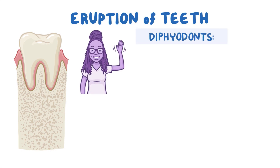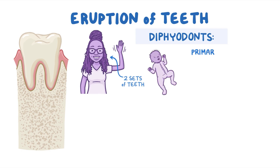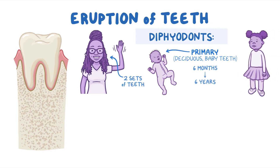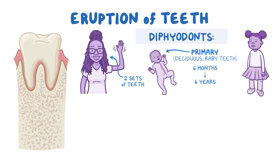Humans are diphyodonts, which means we have two sets of teeth during our lifetime. The first set, the primary teeth, also called deciduous teeth or baby teeth, start erupting at around six months of age. And by about six years of age, the primary teeth fall out and are replaced by a set of permanent teeth that stays with you for the rest of your life.